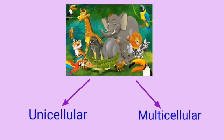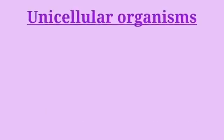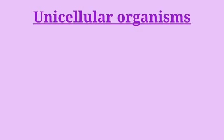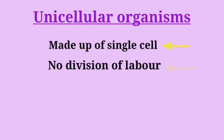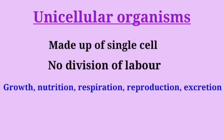Now let's see what is unicellular organism. Unicellular organisms are made up of only one cell. As they are made up of one cell, there is no division of labor present. We'll come to know about division of labor ahead. All the functions like growth, nutrition, respiration, reproduction, excretion are performed by only one cell.